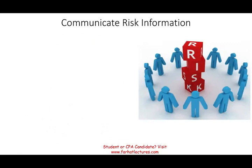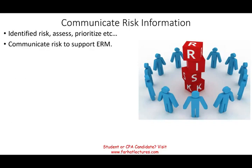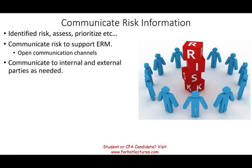Now, communicate risk information. In the first four components we talked a lot about risk — we set the risk, determined what it is, identified it, assessed it, and prioritized it. But at the end of the day we have to communicate this risk to support ERM. Each person in the company needs to know what risk they deal with. Some departments or individuals are responsible for different types of risk — for example, a warehouse worker may not worry about foreign currency risk, while your accounts receivable or foreign currency desk will be interested in currency fluctuation. Communication must be both internal and to external parties as needed.